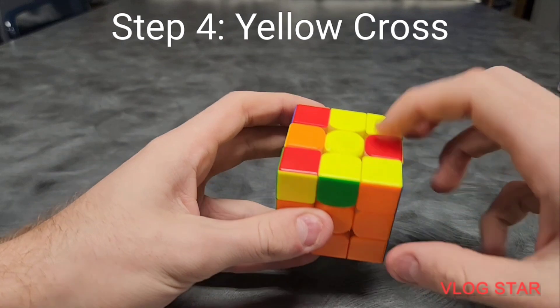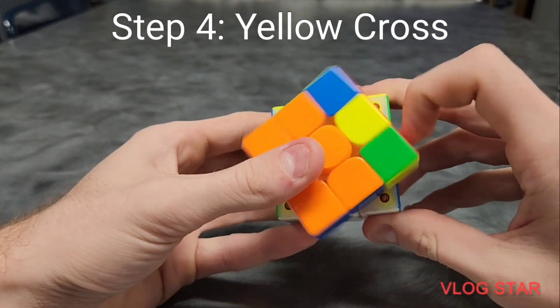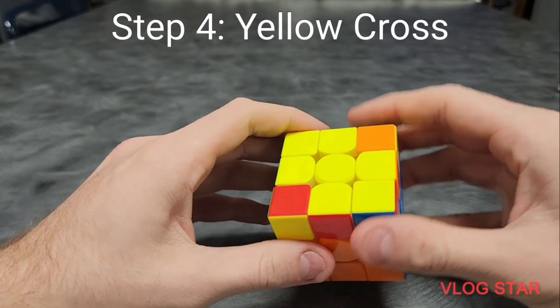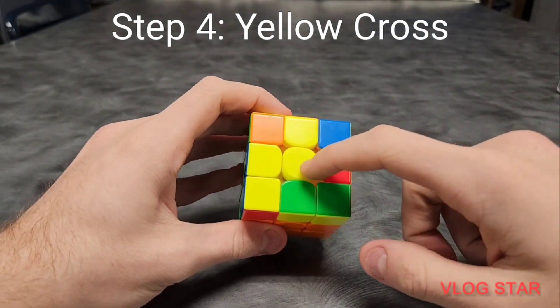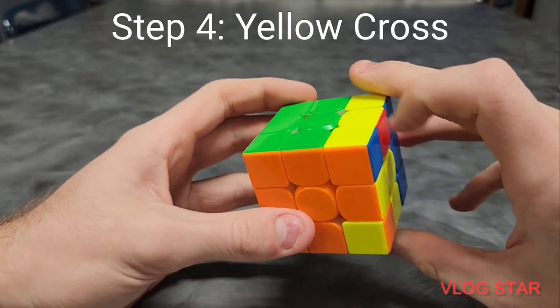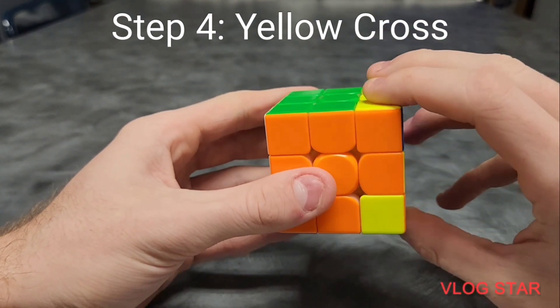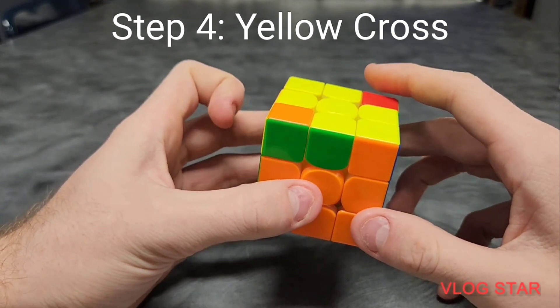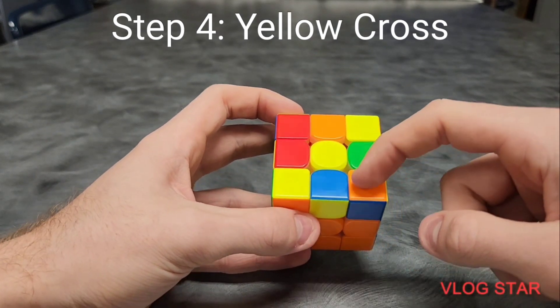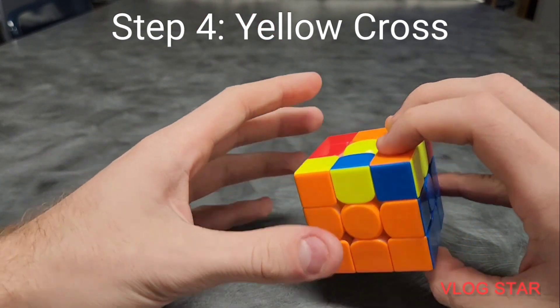Now we're creating a yellow cross. If your edges and center match up to make that line, use algorithm 4 after making the line horizontal. It should create a yellow cross. And if you have an angle like this, make the angle face right, and then use algorithm 3. It has that wide F move. Use algorithm 3 to create the yellow cross on top. And if you have the dot, use them in any order you like, but you have to use both. You have to use one and then the other.